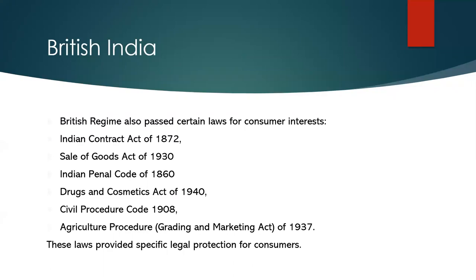The British passed laws like the Indian Contract Act, Sale of Goods Act, Indian Penal Code, Drugs and Cosmetics Act, Civil Procedure Code, and the Agriculture Produce Grading and Marketing Act of 1937. These laws were not specifically for consumer protection, but they did cover consumer rights within their periphery. The IPC has provisions against adulteration and counterfeiting; the Contract Act and Sale of Goods Act also protect consumer rights.